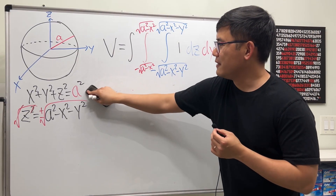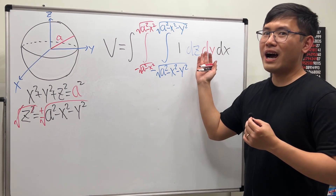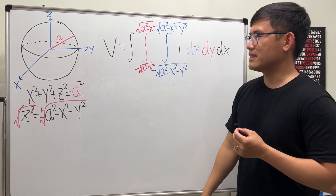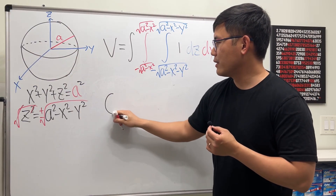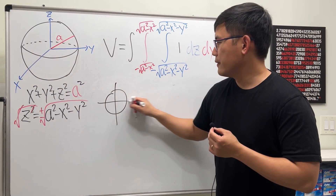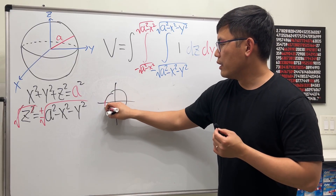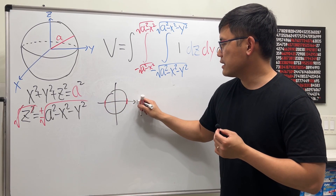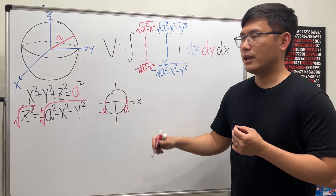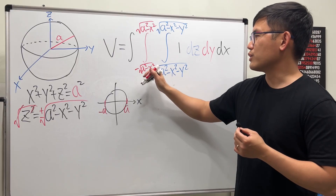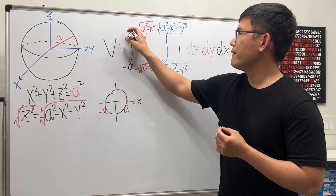Lastly, for x: just look at it as the circle. The x-axis goes from negative a to a — there's no more x inside, so dx just goes from negative a to a. That's the full setup for rectangular coordinates.